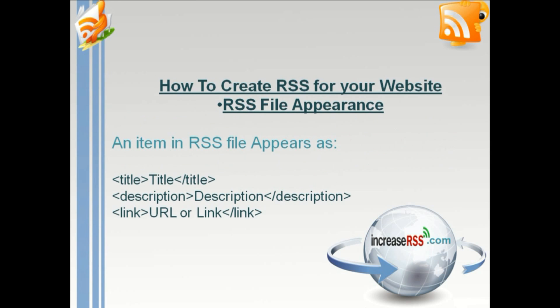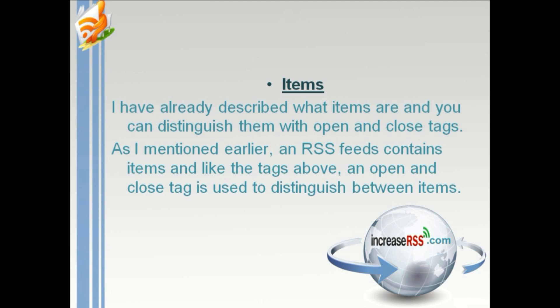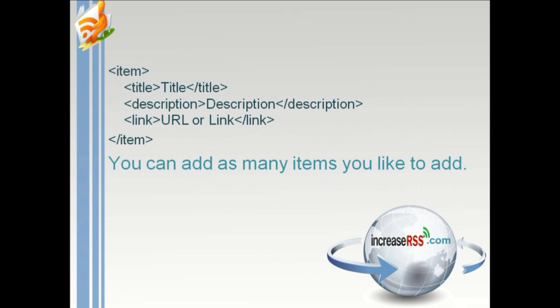An item in an RSS file appears as HTML tags. Items can be distinguished with open and closed tags. An RSS feed contains items, and like the tags above, open and closed tags are used to distinguish between items. You can add as many items as you like using the process described above.